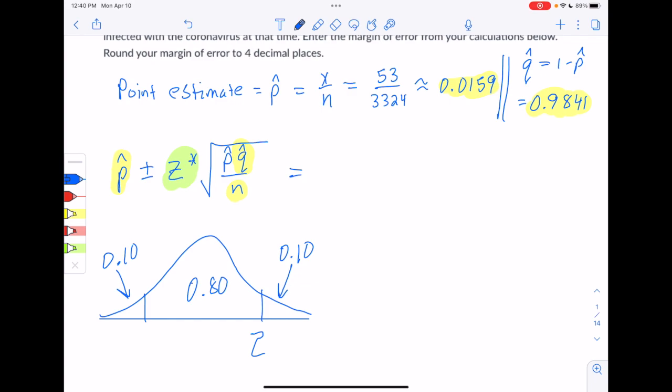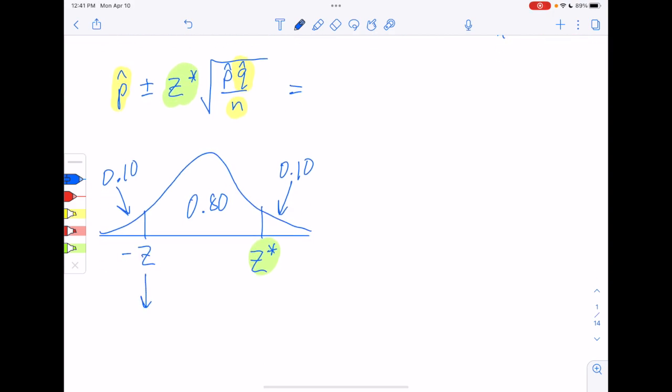And then this boundary right here would be z-star. So even though that's the value we want, that z-star we're looking for, we're going to go ahead and start out by finding this z on the left-hand side right here, which will be the negative one. We do that just because it works a little bit better with the inverse normal. When you're doing a z-score for these, you want to do the inverse normal function and you want to put the area to the left. We have the area to the left written down for the negative z, it's 0.10.